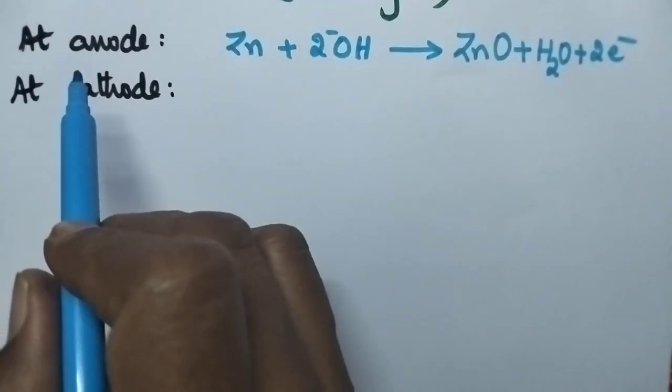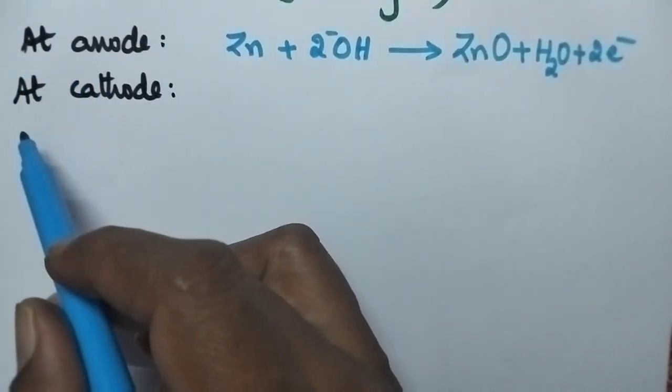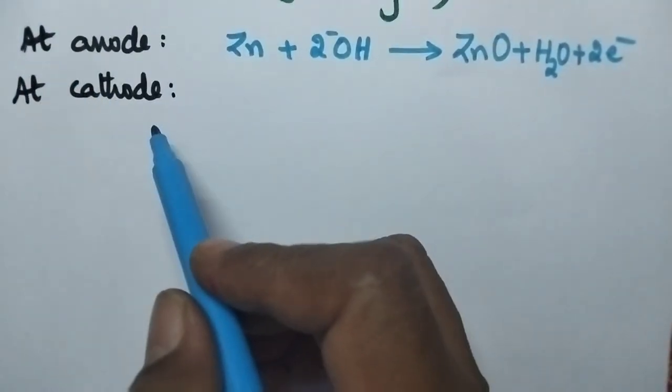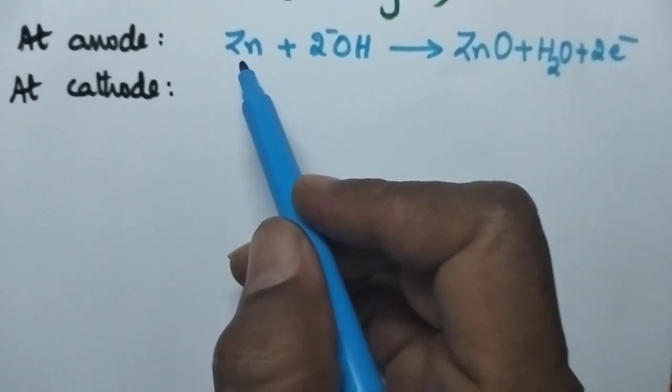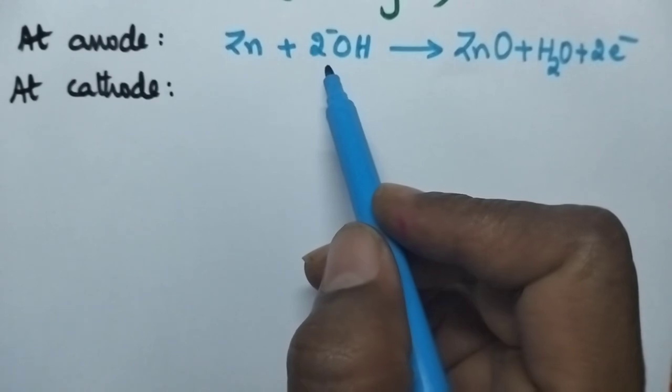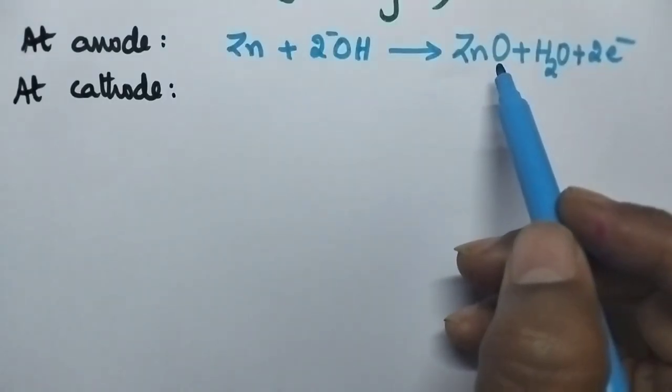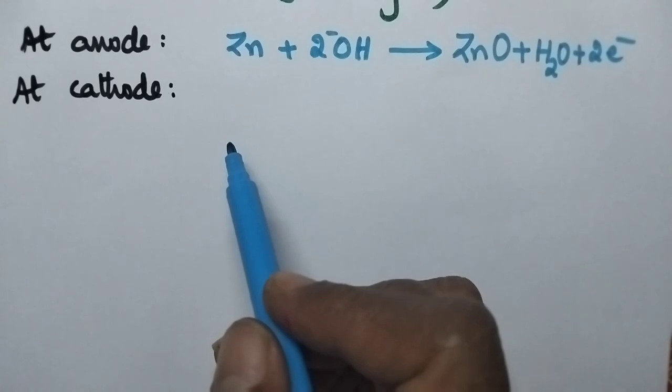At the anode oxidation takes place, whereas at the cathode reduction takes place. So initially at the anode, zinc reacts with OH minus ions and gets converted into zinc oxide with the loss of 2 electrons.